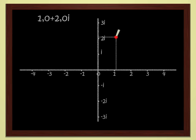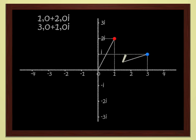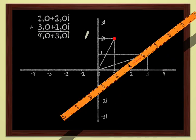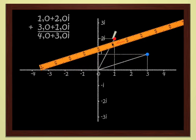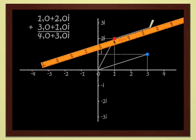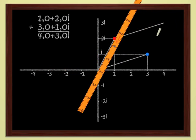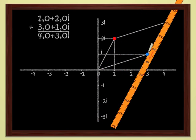Look at the red point, which is the point 1 plus 2i. Let's add 3 plus i, which is the blue point. Well, you add them just as school children do, giving 4 plus 3i. Geometrically, this is just addition of vectors. You see that it's no problem to add complex numbers.